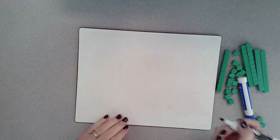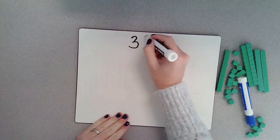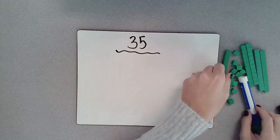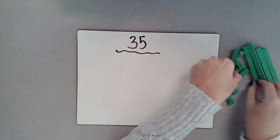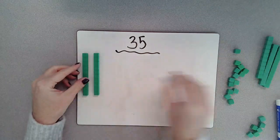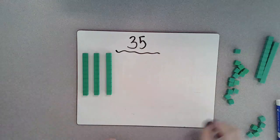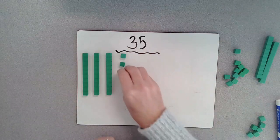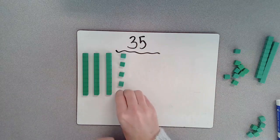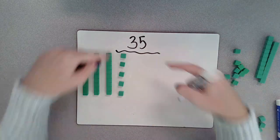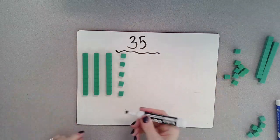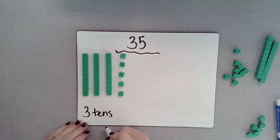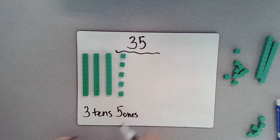This time we're going to be working with the number 35. One way I can do it is I can find three tens—10, 20, 30—and five ones: one, two, three, four, five. So one way I can break apart the number 35 is I can break it down into three tens and five ones.